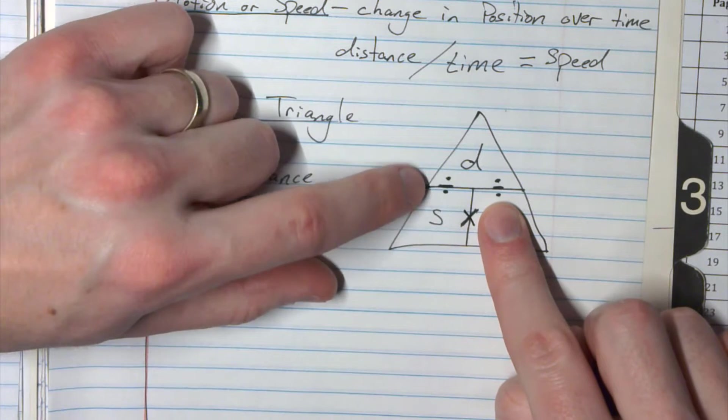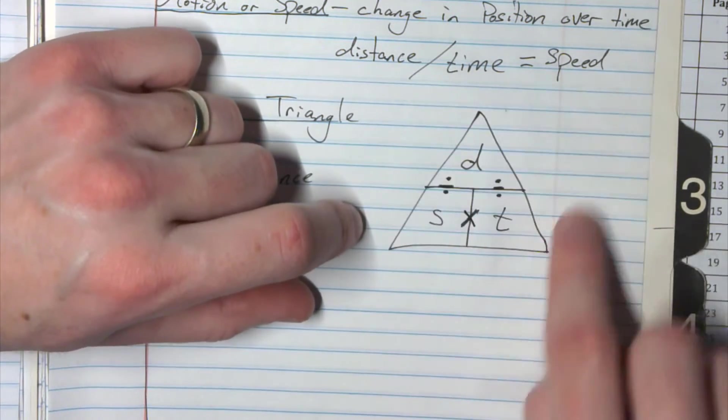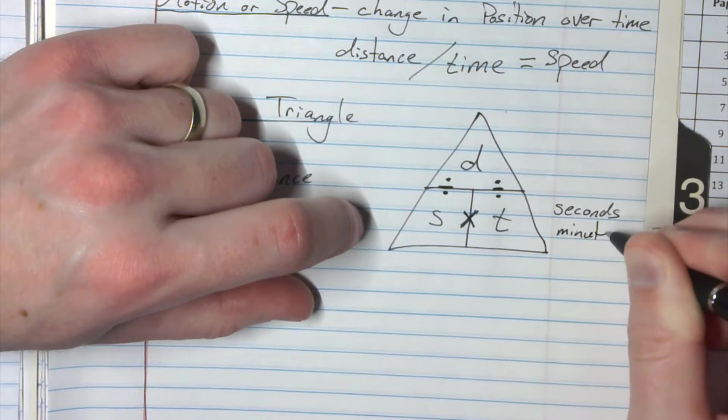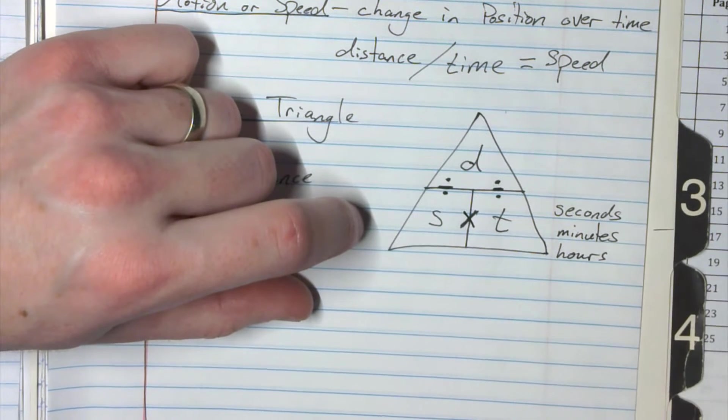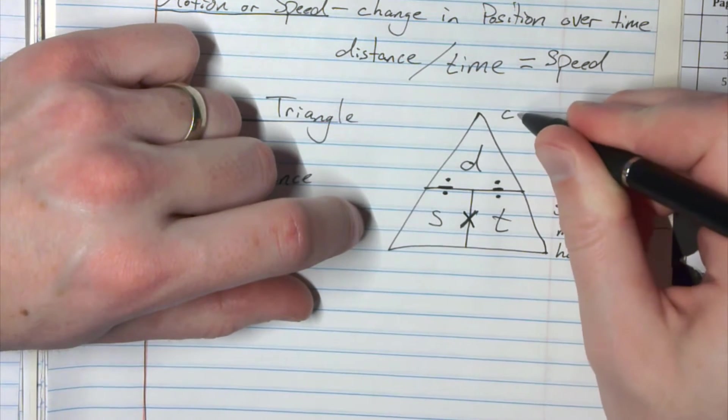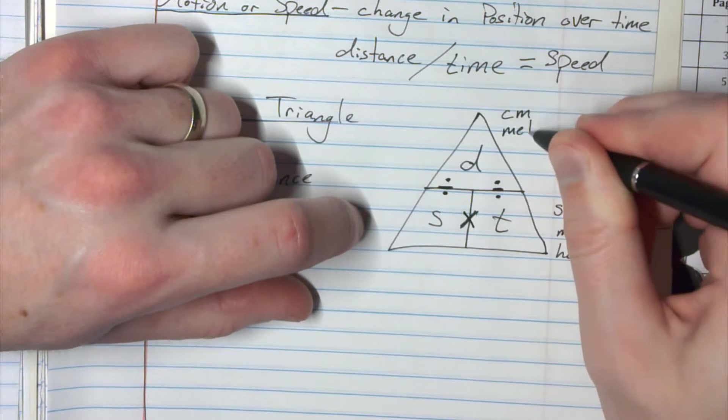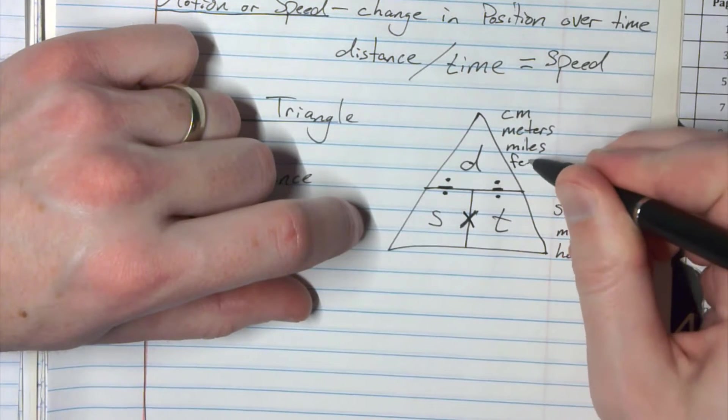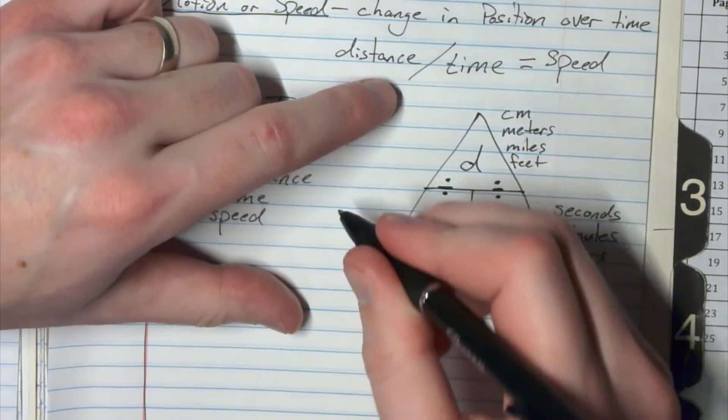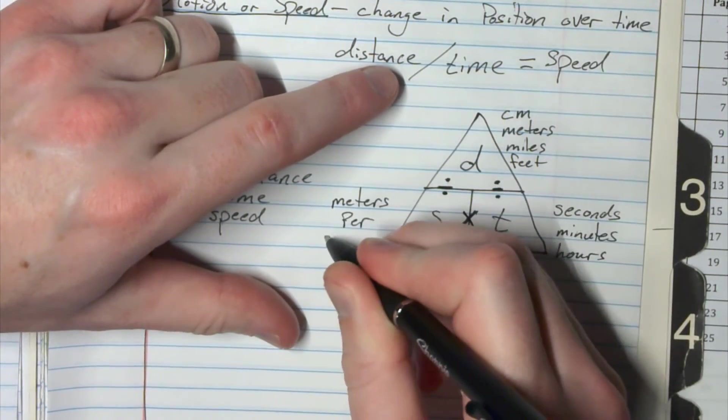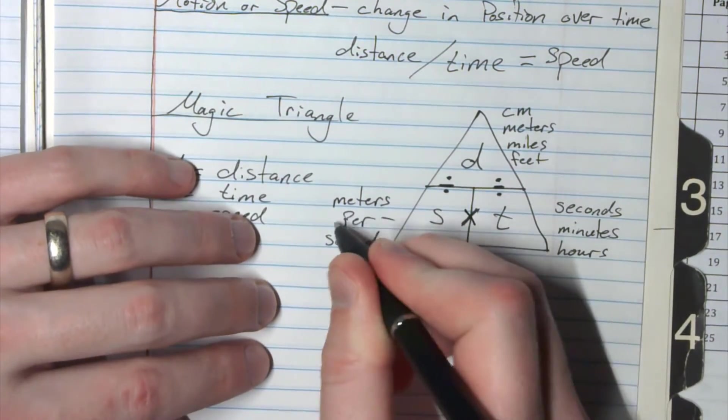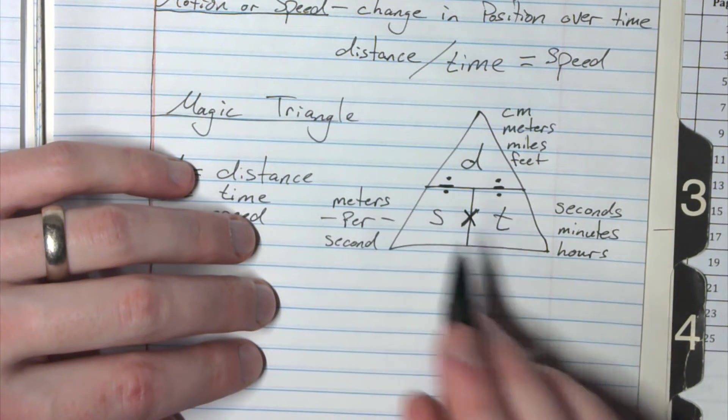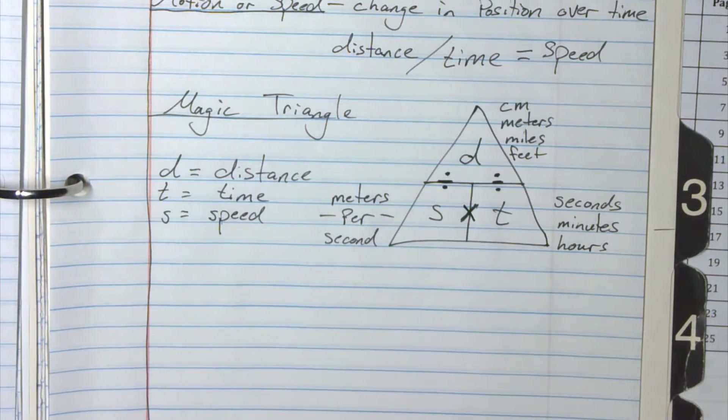So maybe the hardest part is figuring out, okay, what is the distance and what is the speed, and then you have to know the units and stuff. So for time it might be seconds or minutes or hours. Distance - we could go centimeters, meters, it could be miles, could be feet. Those are distances. And then for speed we could do meters per second. The key word here is 'per,' so if it has the per, that means it's a speed. So that's how we use the magic triangle. It's gonna be very helpful for when we do those equations.